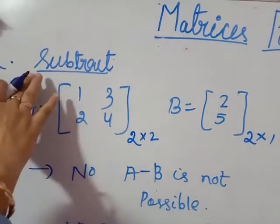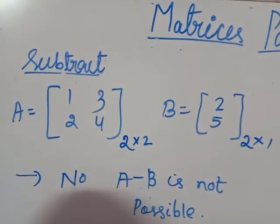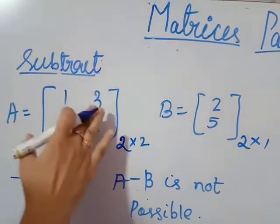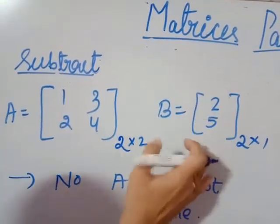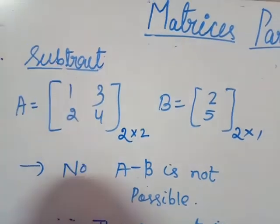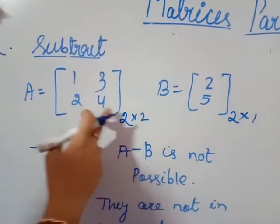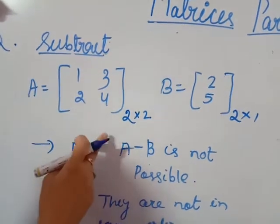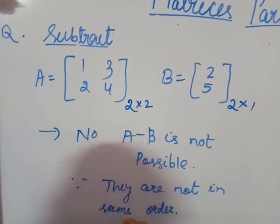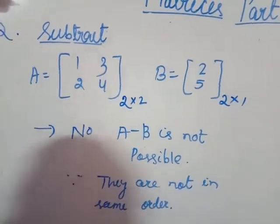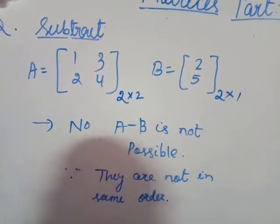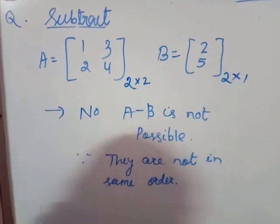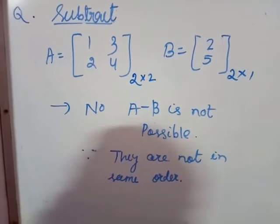Now the next question asks you to subtract. Again, I have taken the same matrices: A equal to 1, 3, 2, 4 and B equal to 2, 5. Subtraction is also not possible because they are not in the same order. As per the conditions of addition and subtraction, the matrices must have the same order. So addition and subtraction are both not possible here.